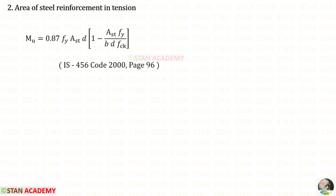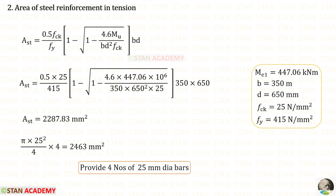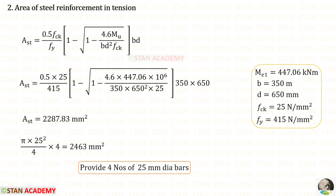Now we are going to find the area of steel in tension. From the code book page number 96, we copy the formula for MU and apply ME1 in Newton millimeter, multiplying by 10 to the power 6. Solving the equation using a calculator gives us AST. Alternatively, using the direct formula and applying all values, we get AST. Let us try with 4 numbers of 25 millimeter diameter bars, so the provided AST will be 2463 millimeter square. We must ensure that the provided AST is more than the required AST.